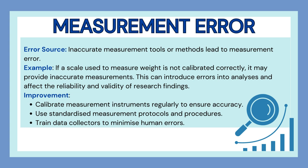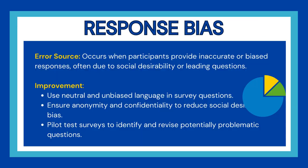Next comes measurement error. The error source is inaccurate measurement tools or any method adopted that leads to incorrect measurements. For example, if you have created a scale to measure weight that is not calibrated correctly, it may provide inaccurate measurements, introducing errors into analysis and affecting the reliability and validity of research findings. Improvements include calibrating measurement tools regularly, using standardized measurement protocols and procedures, and training data collectors to minimize human errors.